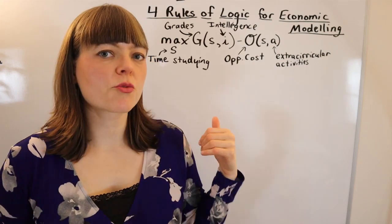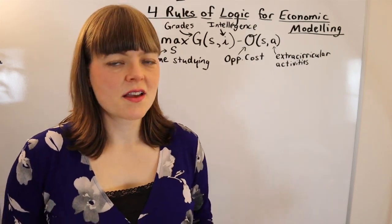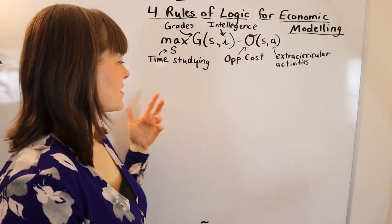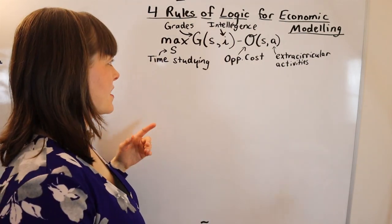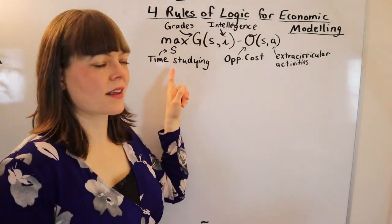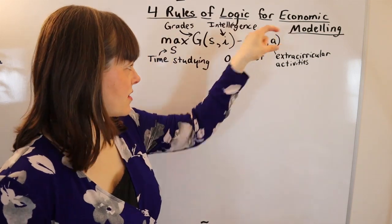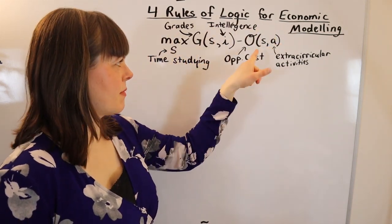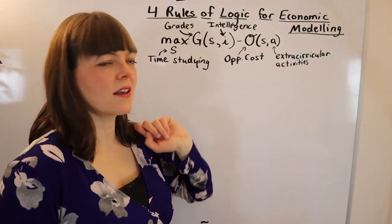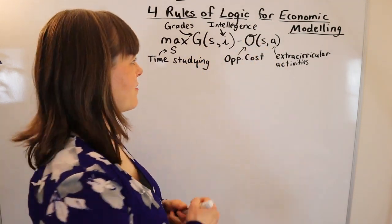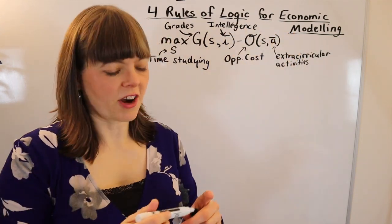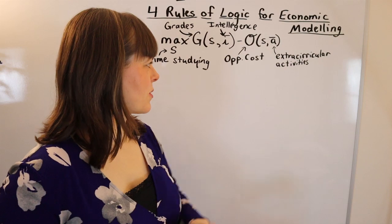In this video I'm going over four rules of logic for economic modeling. This is the base model that I like to start with when thinking about these things. It's a model of someone choosing how much time to study in a given week, and their objective function is their grades minus their opportunity cost, where both of those are a function of time spent studying. We have two exogenous variables: intelligence and extracurricular activities.